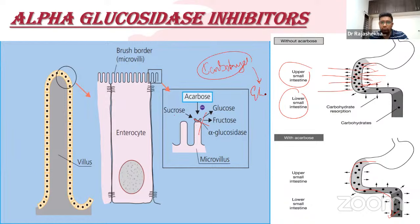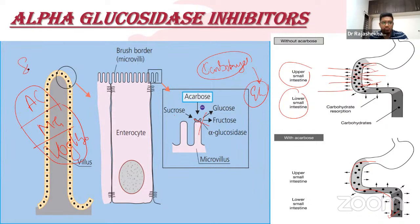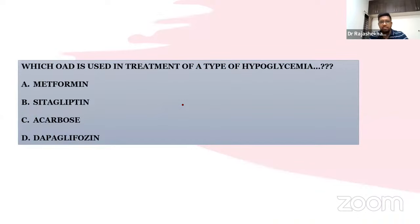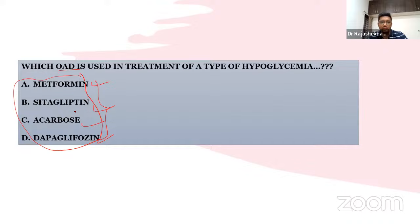Three drugs are available: acarbose, miglitol, and voglibose (ogiibose). They act preferentially on different polysaccharides. An important exam question: which OAD is used to treat a type of hypoglycemia? The answer is acarbose, used in reactive hypoglycemia (postprandial hypoglycemia) — a condition in both diabetics and non-diabetics where minor meal ingestion causes disproportionate insulin secretion leading to hypoglycemia.